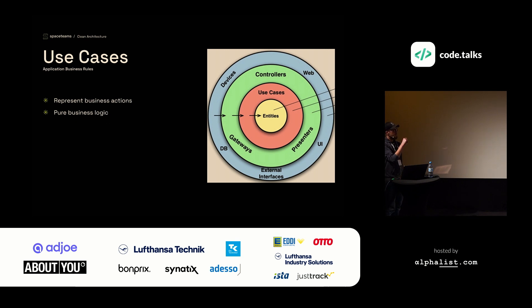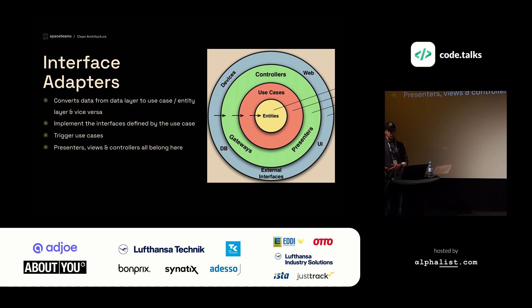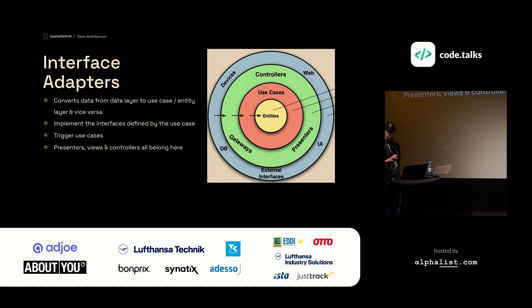Then we have our use cases, the red circle. These are our application business rules. This layer represents our business actions, and we have pure business logic there. The next layer, the green one, is called interface adapters. This layer is responsible for converting data from your data layer to the use cases layer and entities layer, and vice versa. It's also responsible for implementing the interfaces defined by the use cases and triggering the use cases. Overall, you would put your presenters or controllers in this layer.